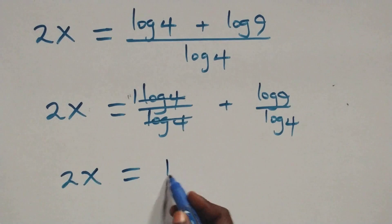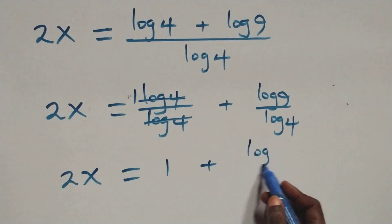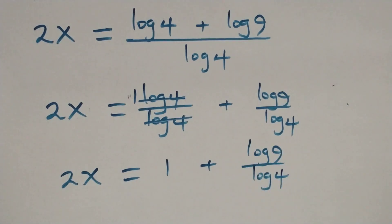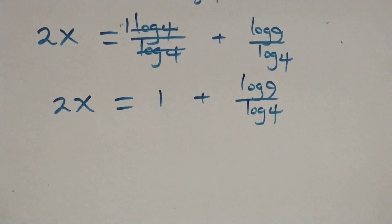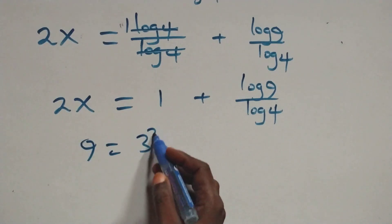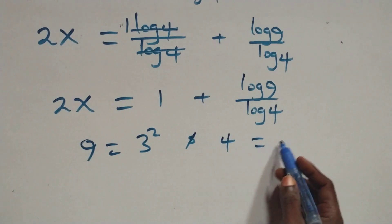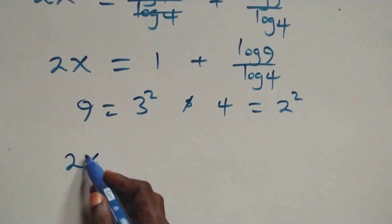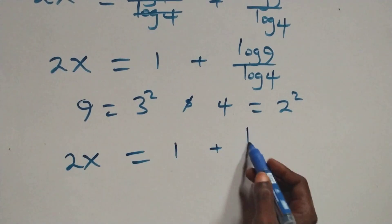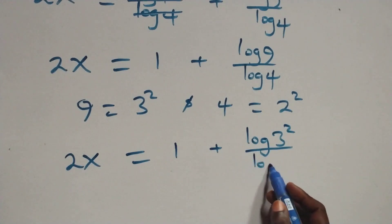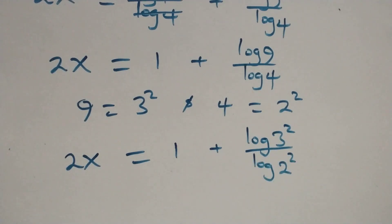That is, 2x equals 1 plus log 9 over log 4. We can write 9 as 3 times 3, that's 3 squared, and also 4 as 2 times 2, that's 2 squared. So all we have here becomes 2x equals 1 plus log 3 squared over log 2 squared.